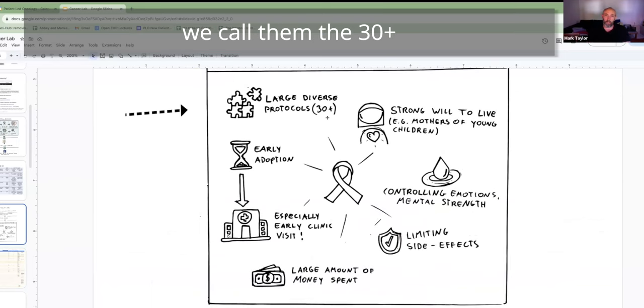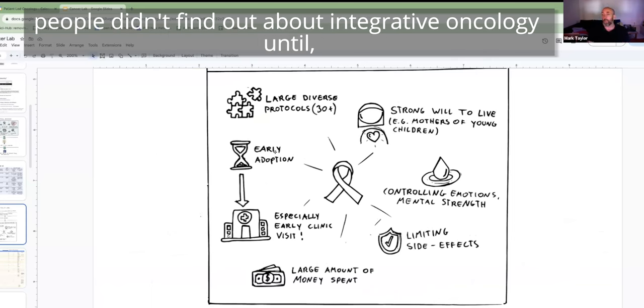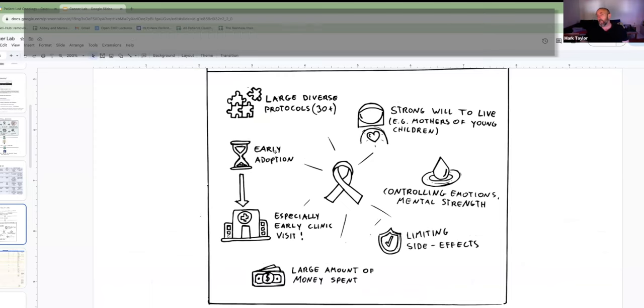Large protocols - we call them the 30 plus - early adoption of the protocols. If people left it, if people didn't find out about integrative oncology until they've already got resistance, it didn't work.